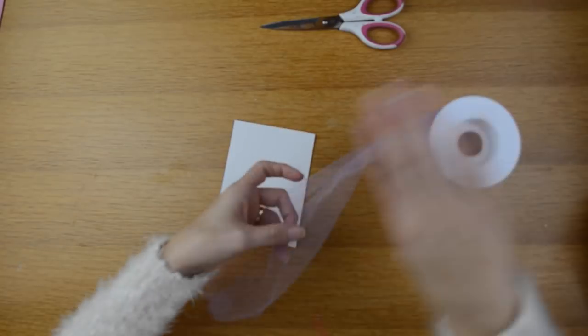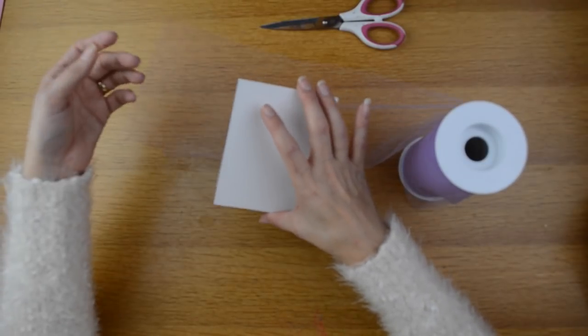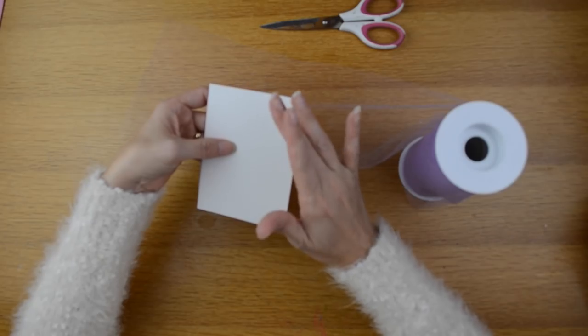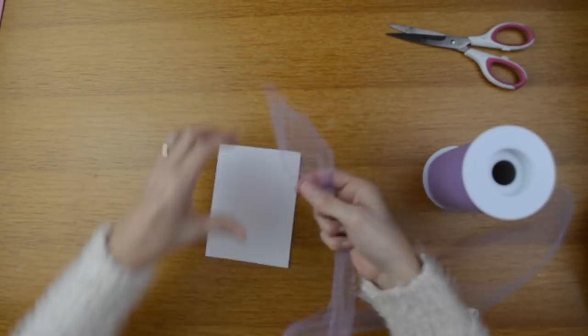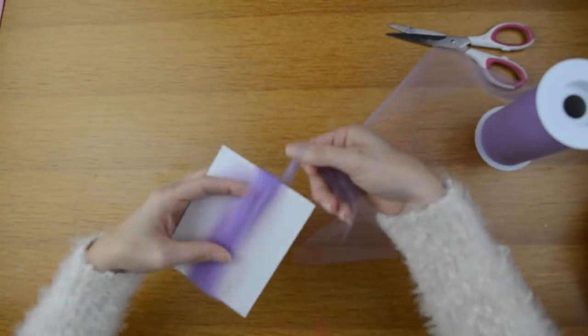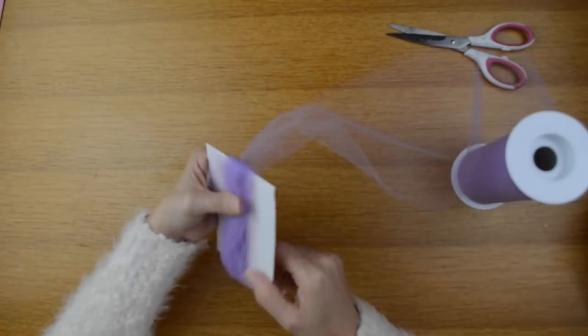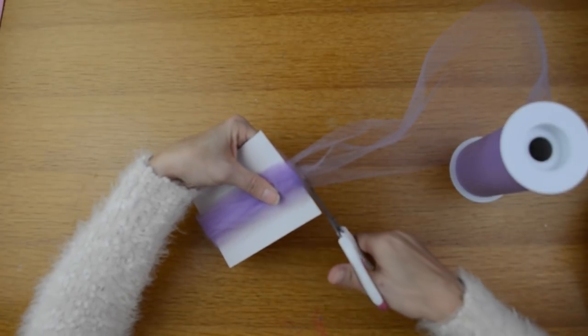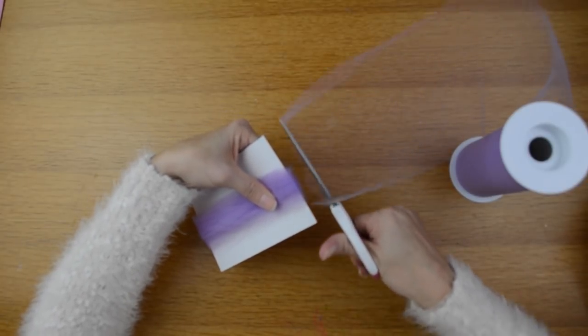Now I'm going to take my tulle and I'm going to wrap it around this piece of cardboard. I'm going to wrap it around about 15 times. Once you've got it wrapped around, you'll clip the end off.